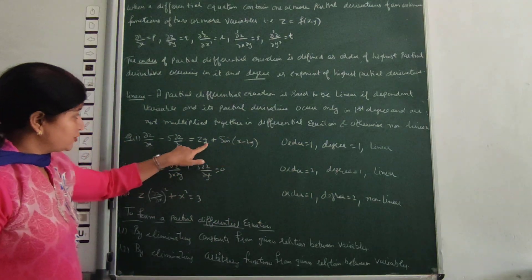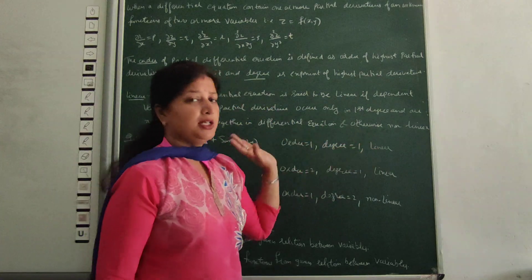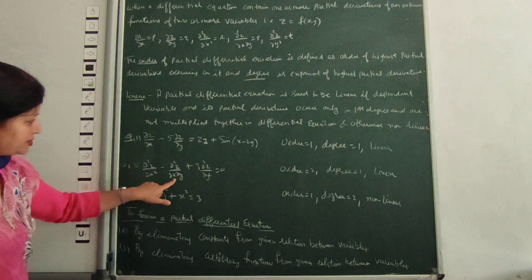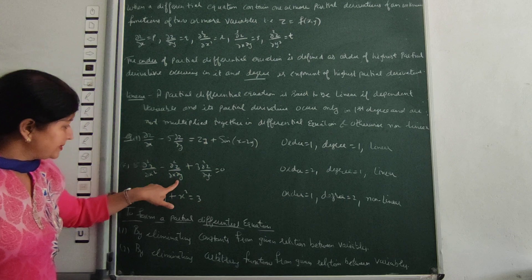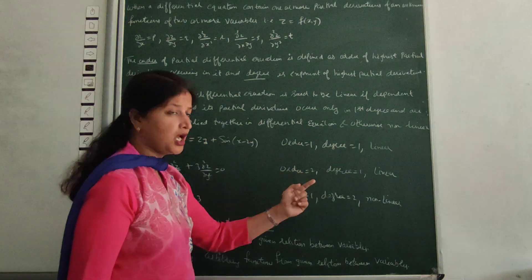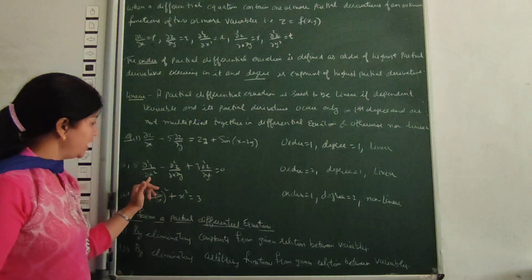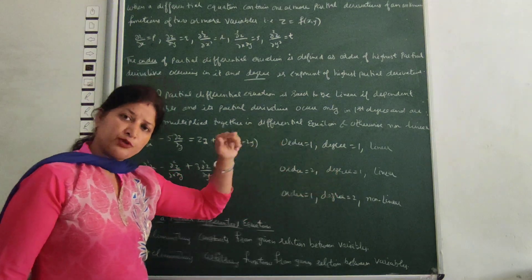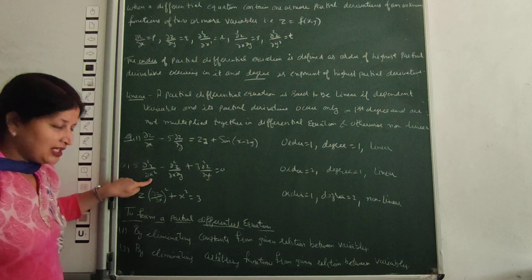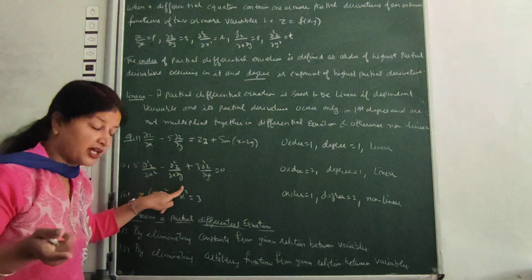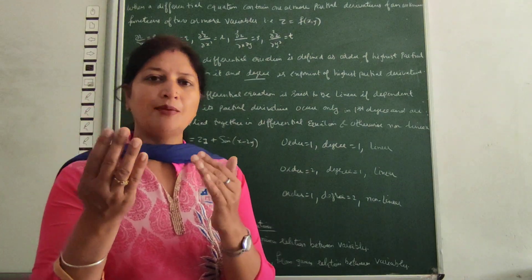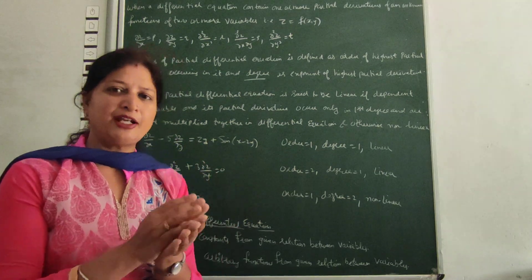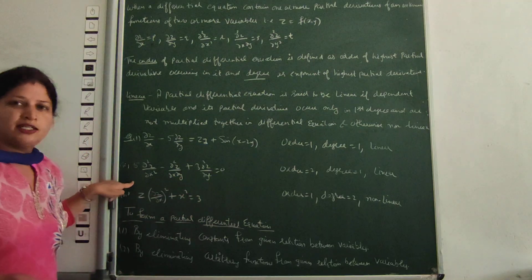For another example, we have all second order derivatives. We have double derivative with respect to x, double derivative with respect to x and y, and double derivative with respect to y. So the order is 2. The degree — since these are not squared or multiplied together — is 1. So this is a linear partial differential equation.